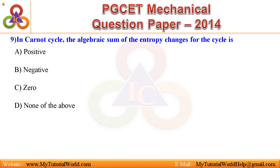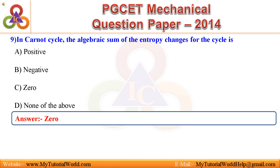Question 9: In a Carnot cycle, the algebraic sum of the entropy changes for the cycle is — a. Positive, b. Negative, c. Zero, d. None of the above. Answer is zero.